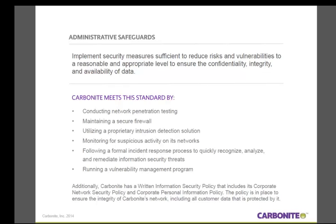Let's go through how Carbonite meets the administrative, physical, and technical safeguards. One administrative safeguard is to implement security measures sufficient to reduce risks and vulnerabilities to a reasonable and appropriate level to ensure the confidentiality, integrity, and availability of data. Carbonite meets this standard because we conduct routine network penetration testing, maintain a secure firewall, utilize proprietary intrusion detection solutions, constantly monitor for suspicious activity on our networks, follow a formal incident response process to recognize, analyze, and remediate information security threats, and run a vulnerability management program.